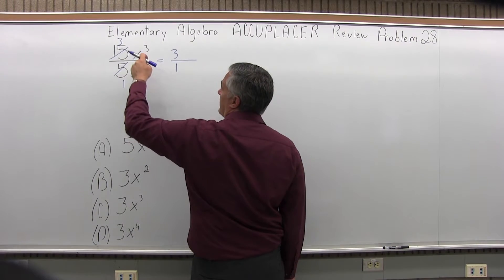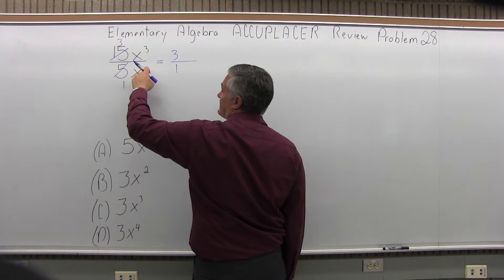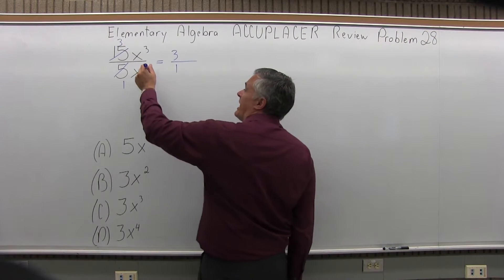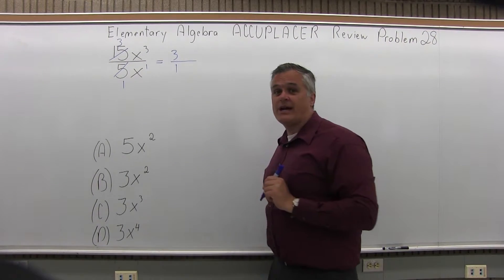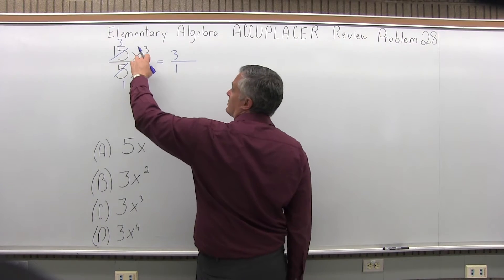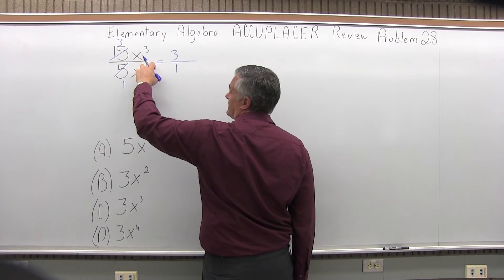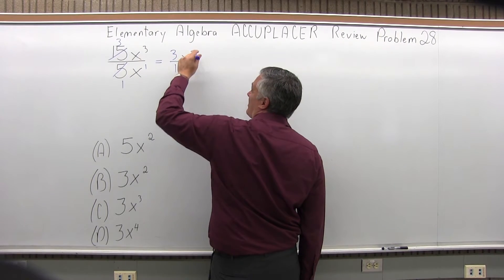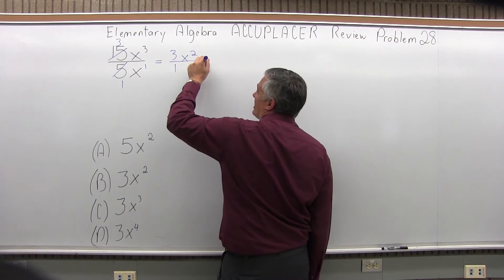And the x to the third on top and the x in the bottom. There's no exponent written for the x in the denominator. You can assume it's the first power and what we do is subtract those exponents. Third power minus first power is second power and we don't really need the one underneath.